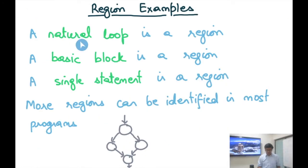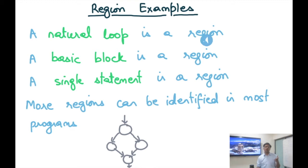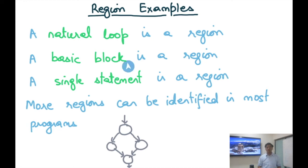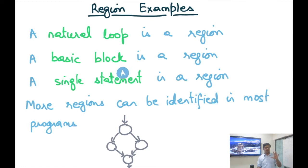Here are some examples of regions. A natural loop is a region — the definition of a region is in complete agreement with the definition of a natural loop: single entry point, all nodes that can reach any other node without going through h are part of the region, and all edges between nodes inside the region are included. A basic block is also a region, since it has a single entry point and is a maximal straight-line sequence of code. A single statement is the smallest region, having a single entry point and only one node.